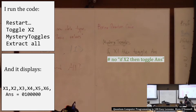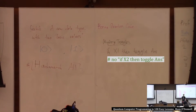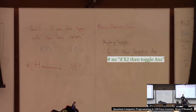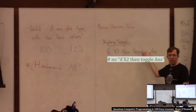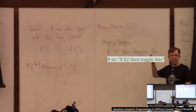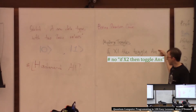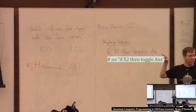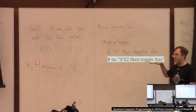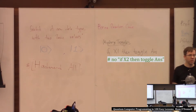At this point, how many possibilities are left? 16, yeah. There used to be 64 because there were six possible toggle instructions — each one could be either in there or not, so 2 to the 6 is 64. Now we know x1 is in there and x2 is not. So there are 2 to the 4 possibilities left — 16 possibilities. We've made good progress, narrowing it down to 16.